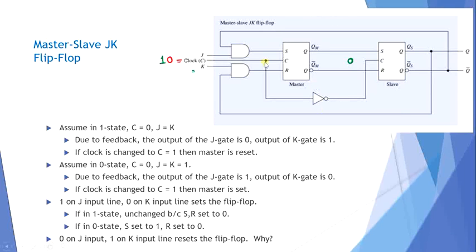You can see the master-slave JK flip-flop here. It consists of two gated SR latches, AND gates, and an inverter. The inverter is used because when the clock input is 0 to the master, the inverted output must be given to the slave. The J and K inputs of the flip-flop have the effect of setting and resetting the flip-flop.